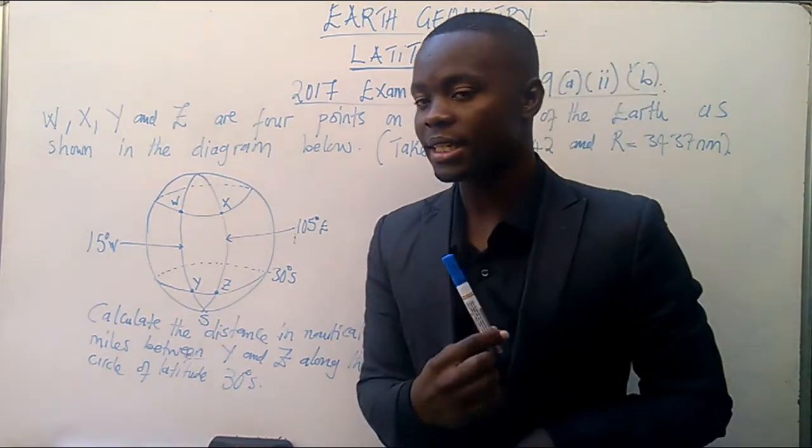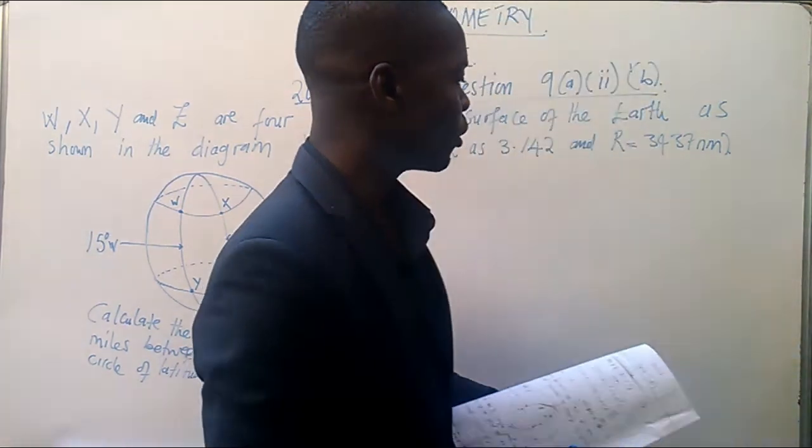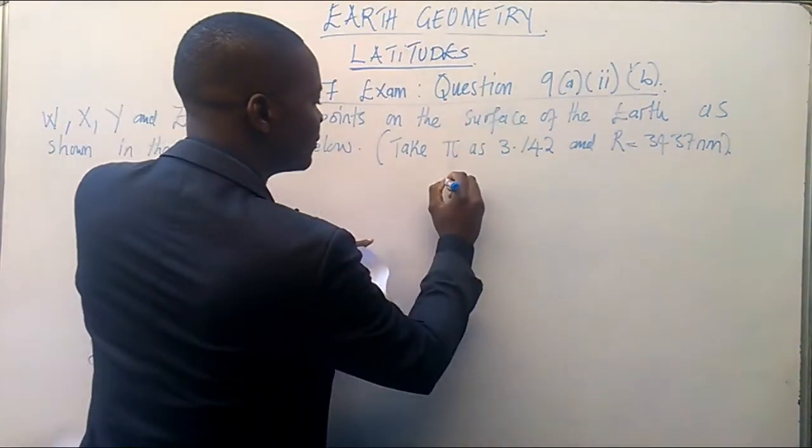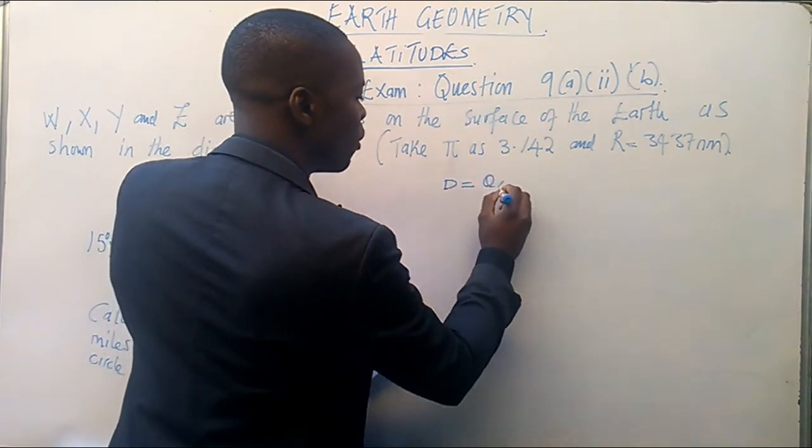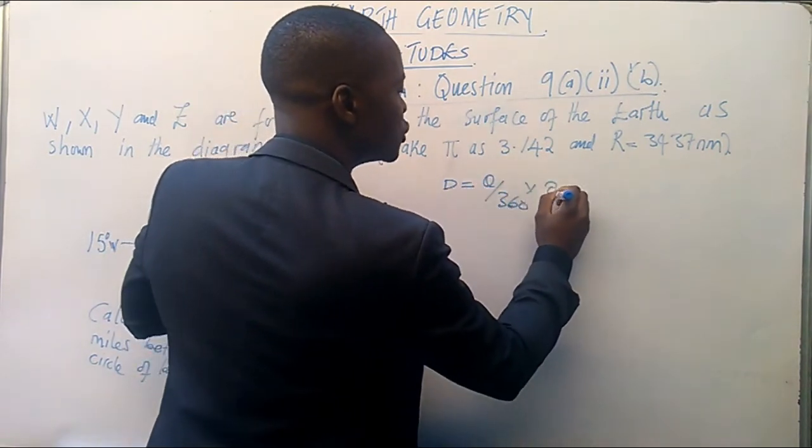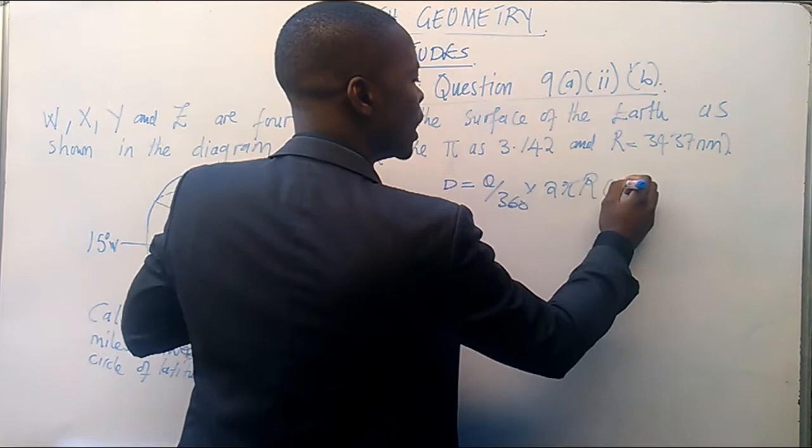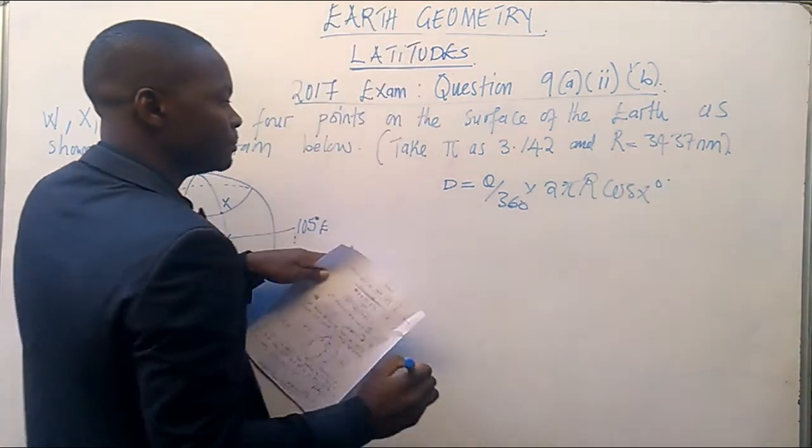Okay. So, but let's enjoy the distance of Y, Z. So we are going to start with the formula by saying D is equal to theta over 360 times 2π capital R cos x degrees. There.